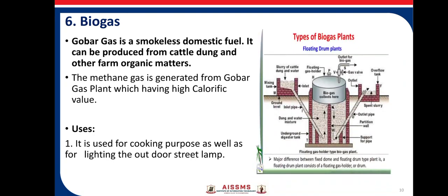The sixth example of renewable energy is biogas. It is also called gobar gas and is a smokeless domestic fuel. It can be produced from cattle dung and other farm organic matter. The methane gas generated from a gobar gas plant has a high calorific value. Uses of biogas: it is used for cooking purposes as well as for lighting outdoor street lamps. The image shows a typical cross-section of a biogas plant.